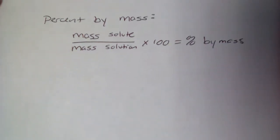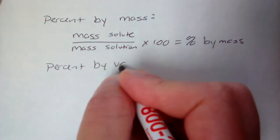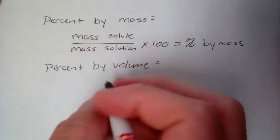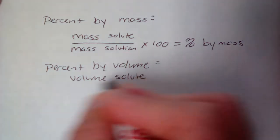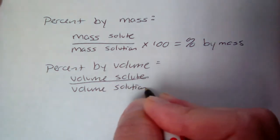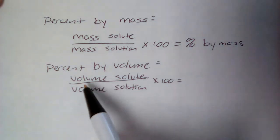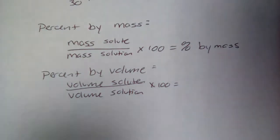The equation is exactly the same for percent by volume, except where it says mass you're going to put volume. So again, it's solute over solution, it's part over whole. That's important. It's the total solution that goes on the bottom. So if they give you information about the solvent, you'll have to add the solute and the solvent together to get that total.